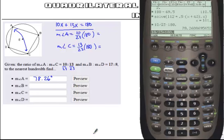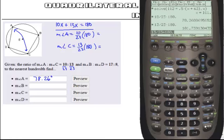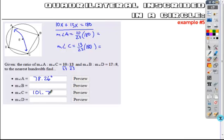And if I wanted to find 13 out of 23 times 180 in decimal form, it's 101.7. So that's angle C, or 101.74.